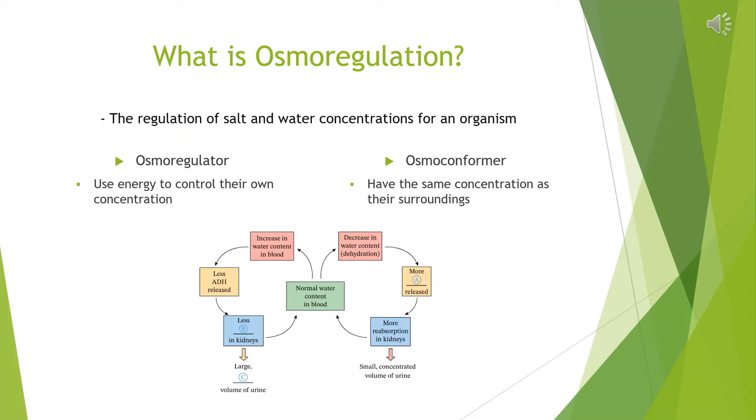There are two types of animals when it comes to osmoregulation. There are osmoregulators who use energy to control their own concentration, and osmoconformers who have the same concentration as their surroundings. This can help predict the habitat the animal is living in.